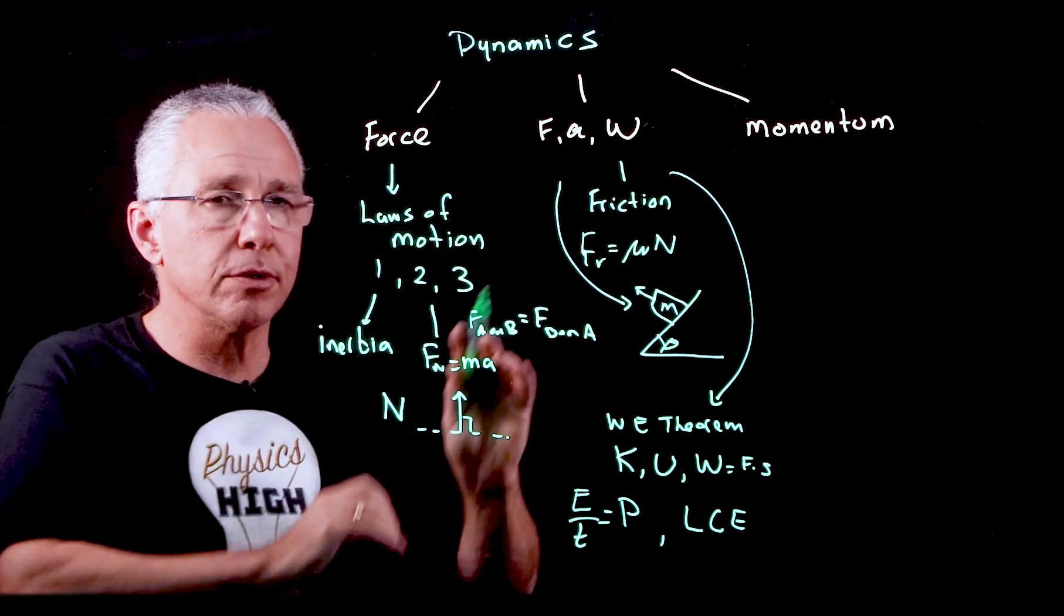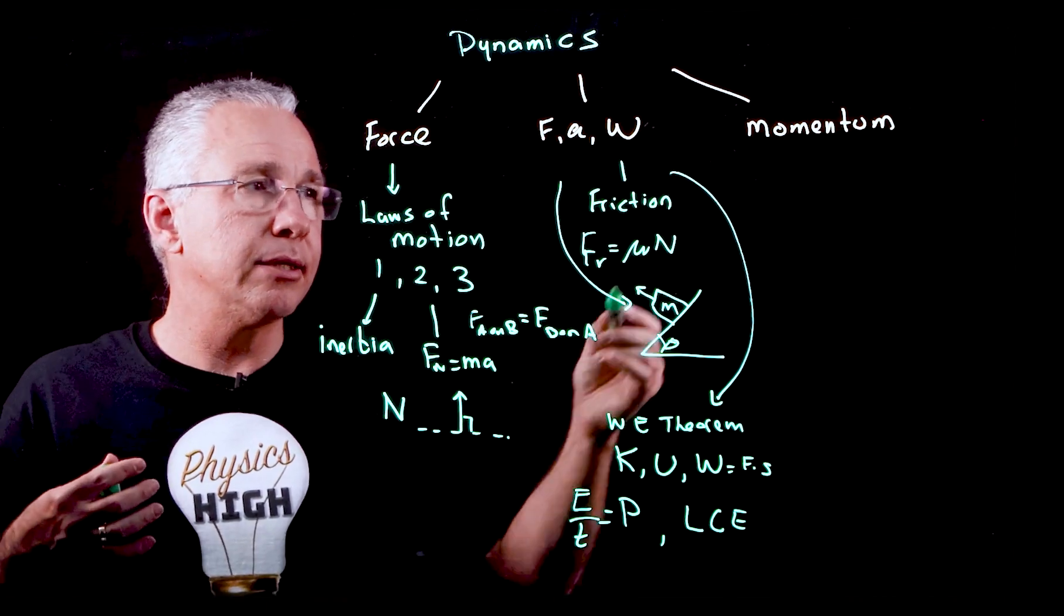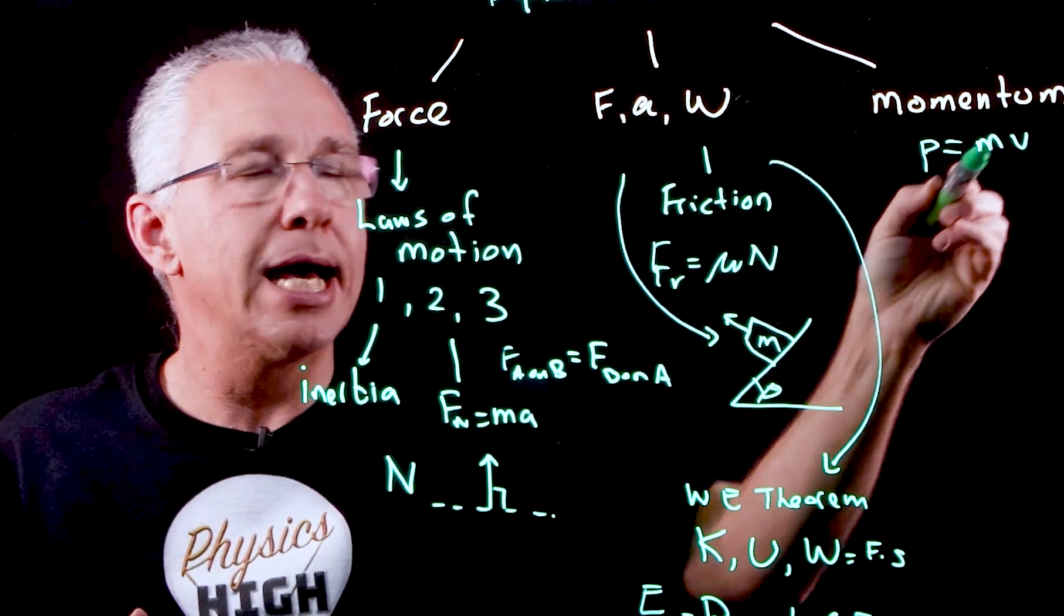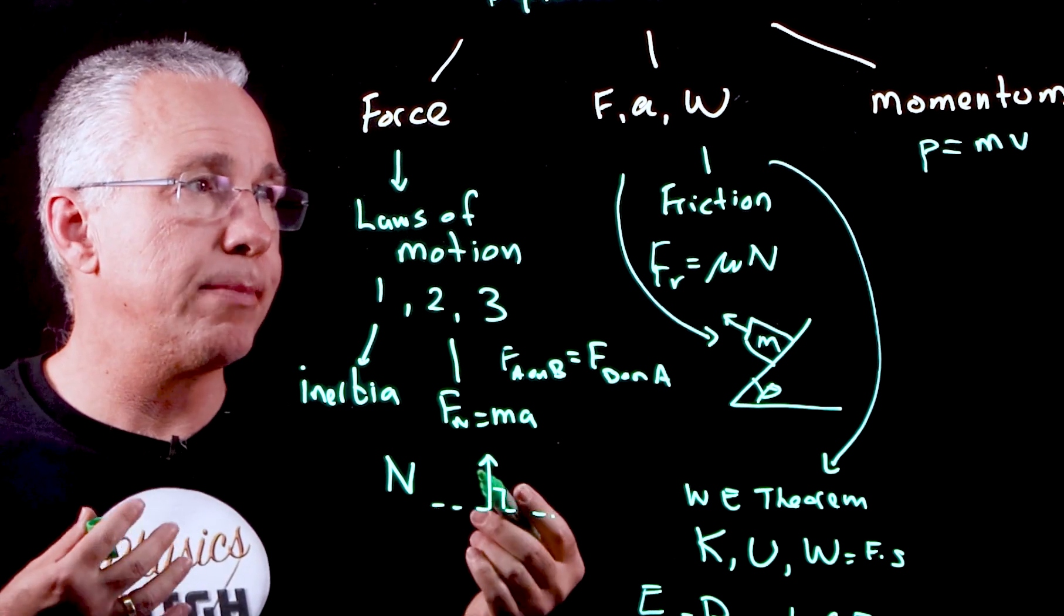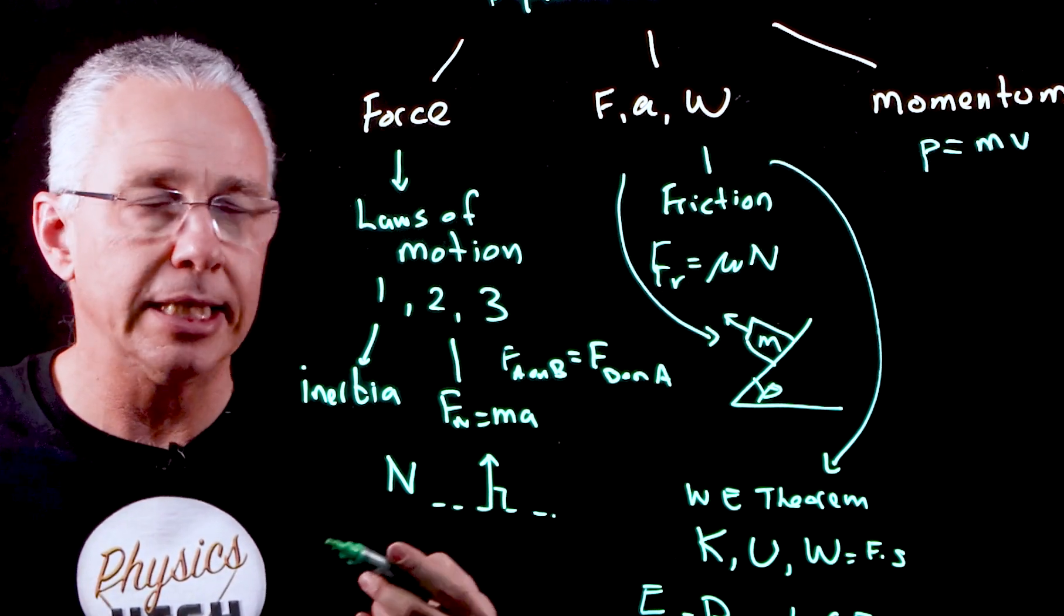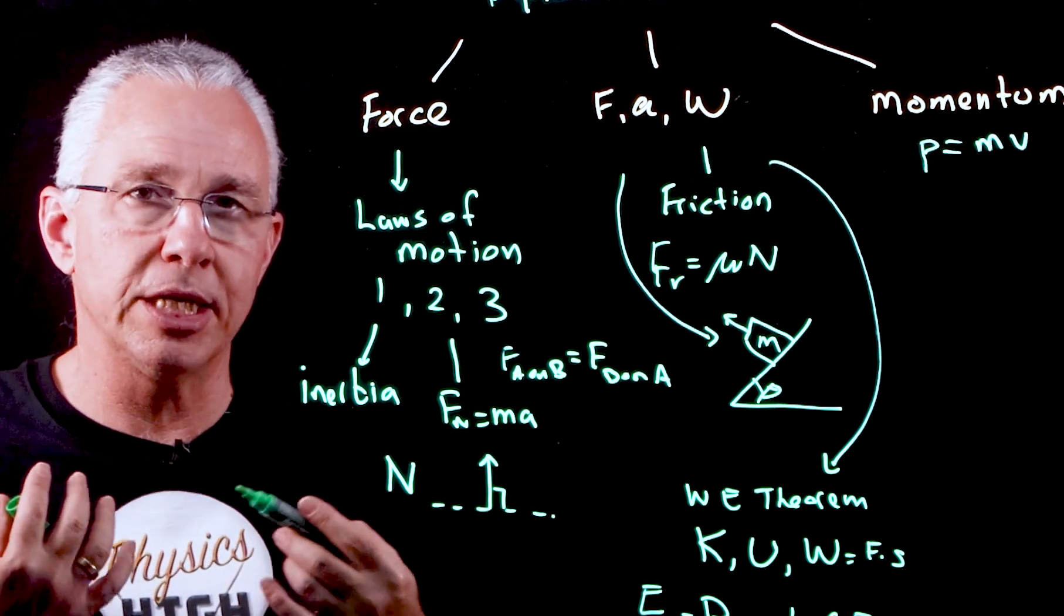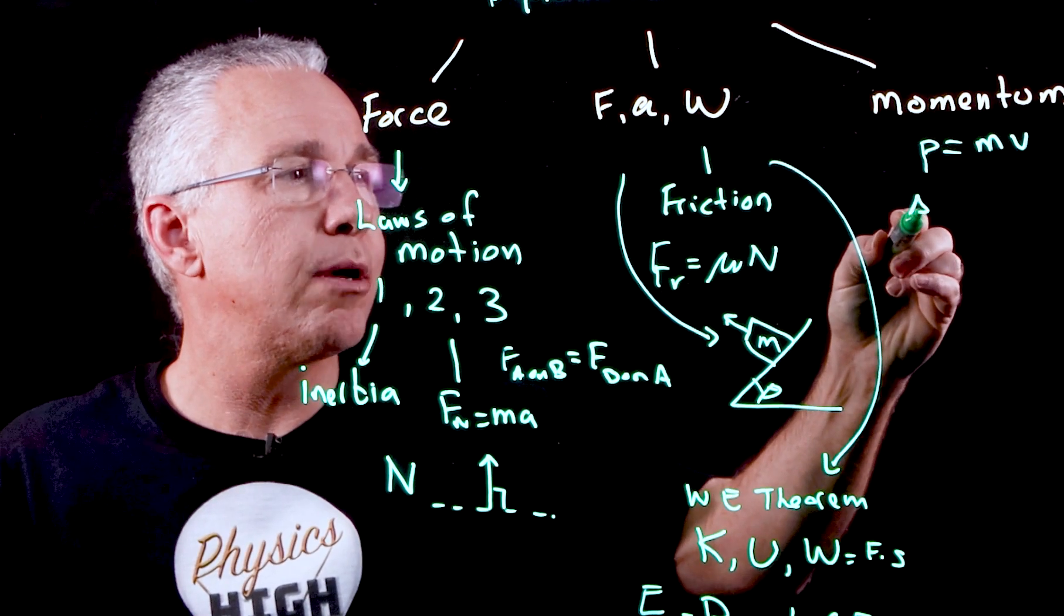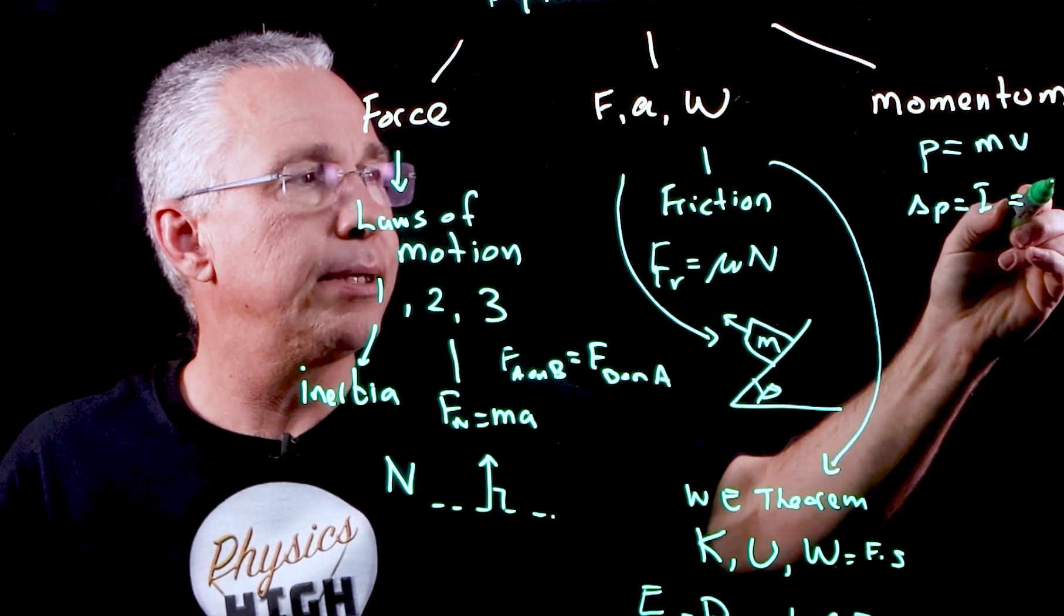We then move on finally to the interactions between objects. And we introduce the concept of the fact that an object moving has momentum, at least in the classical sense. An object with mass that is moving has momentum, and we can increase its momentum by increasing its velocity or increasing its mass. But what we're interested in is interactions when objects collide, for example.